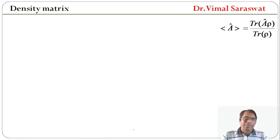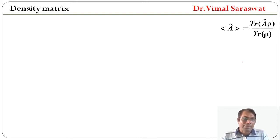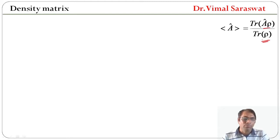Now the ensemble average or expectation value of A is equal to trace of (A rho) divided by trace of rho. The trace is the sum of all the diagonal matrix elements of operator A in any representation.